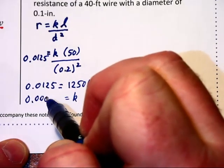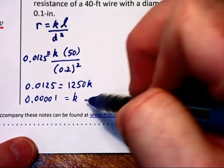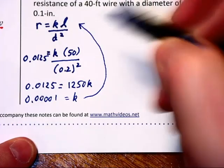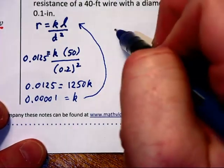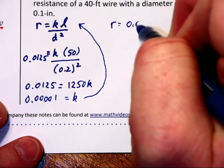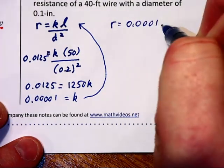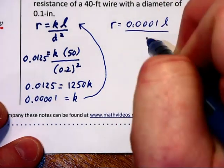That means we can substitute that back up into the top and rewrite our equation as R equals 0.0001 L divided by D squared.